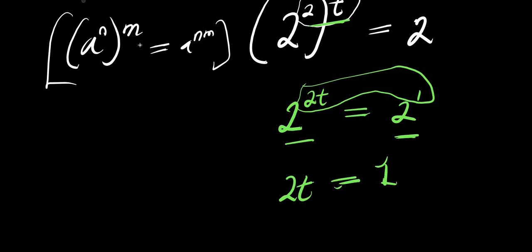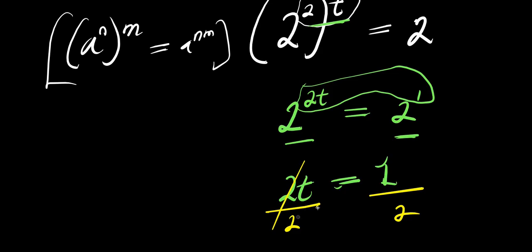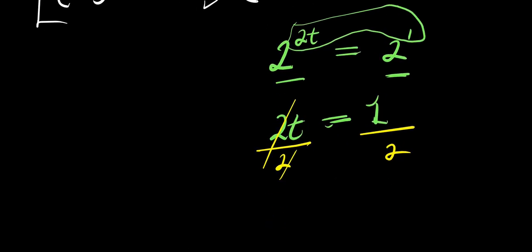We can now solve for t by dividing both sides by the coefficient of t, which is 2. Dividing both sides by 2 gives us t equals 1 over 2.